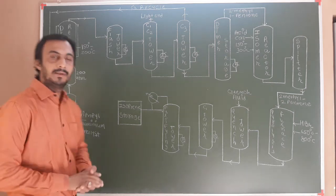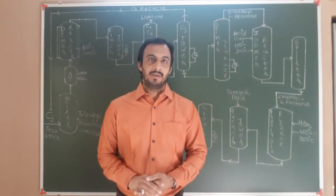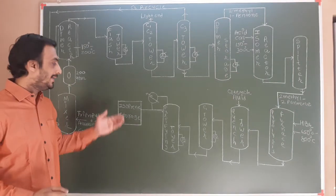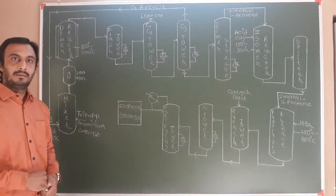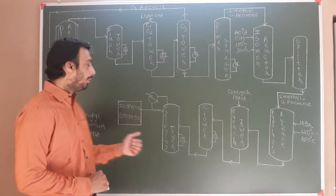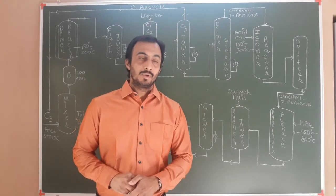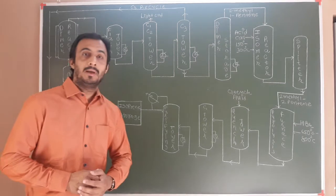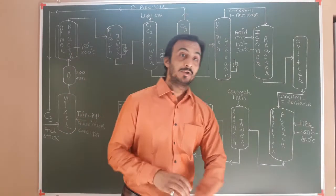Hello friends, welcome to our YouTube channel, Industrial Chemistry Department. Today we will discuss the industrial production of isoprene. This is a very complicated manufacturing process of isoprene from C3 feedstock, which needs propylene. We will also discuss the dimerization process and the isomerization process.